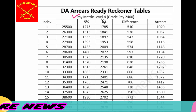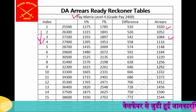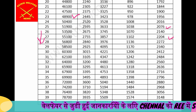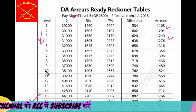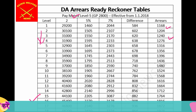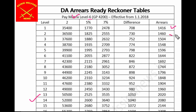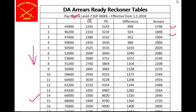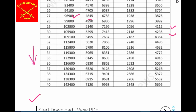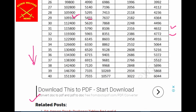This is Pay Matrix Level 4. You can see your area here, stages from 1 to 40. This is Pay Matrix Level 5, stage up to 40 — you can see the stage-wise arrear. Now, Pay Matrix Level 6 — this is your area up to Stage 40. Pay Matrix Level 7 — you can see your area here. And Pay Matrix Level 8 — this is Stage 40, you can see your area here.